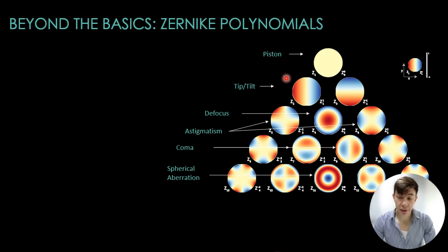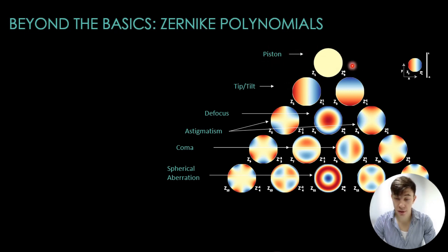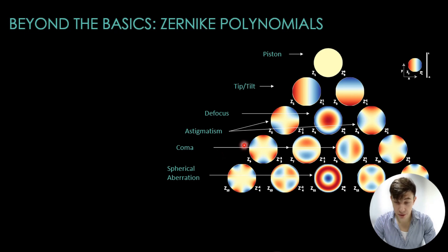In this diagram you can see a few of the most common aberrations expressed as Zernike polynomials. You can see the constant term, which is piston. You can see tip-tilt, where the wavefront shifts in the X or Y direction. You can also see defocus and its effects. You can also see what happens when we have astigmatism — how the wavefront changes in different directions — coma accordingly, and also spherical aberration.